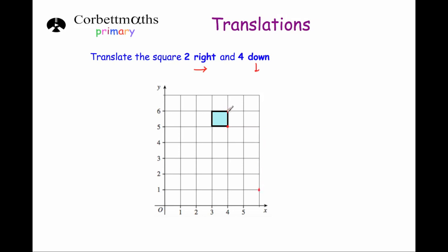Starting with this point: two to the right, one two, and four down, one two three four. Then the next point: two to the right and four squares down. We do the same for all four corners, then join up the sides — and that's where the shape has been translated to. Please use a ruler in a test. That's the square translated two squares to the right and four squares down.